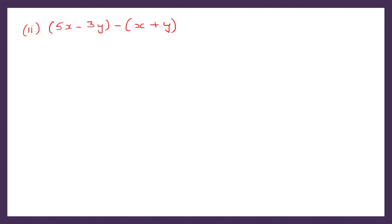Question 2: 5x minus 3y. The first bracket has no sign before it, so it's plus — it's understood, so nothing changes. We write this as it is: 5x minus 3y. Now before the other bracket we have a minus sign, so we need to change the sign of all the terms inside the bracket. So plus x becomes minus x, plus y becomes minus y.